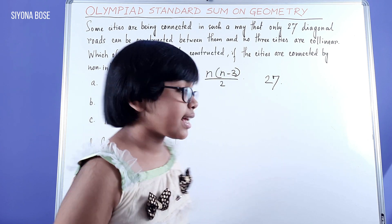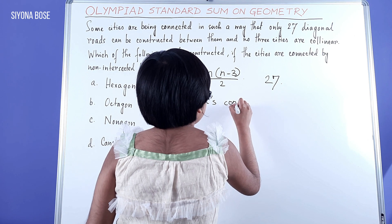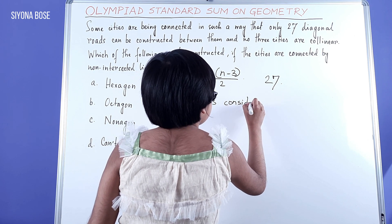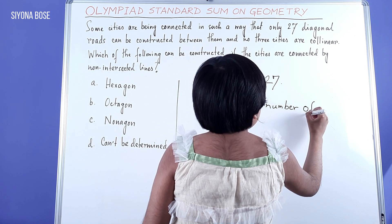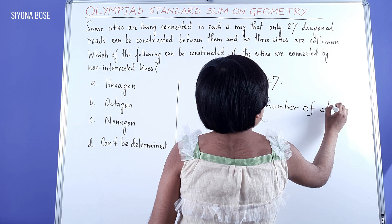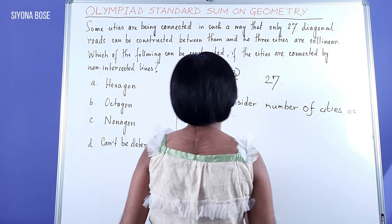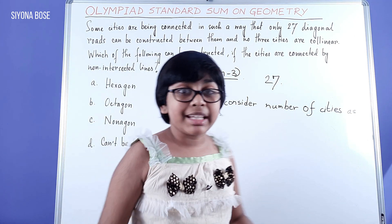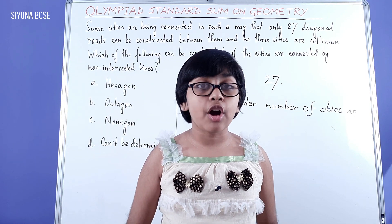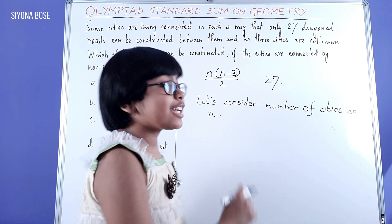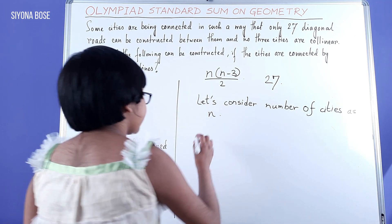Let's consider number of cities as n. Since this connection is a polygon, these cities become the vertices of the polygon, and we know that the number of vertices equals the number of sides of the polygon. That means the number of sides in this is n only.